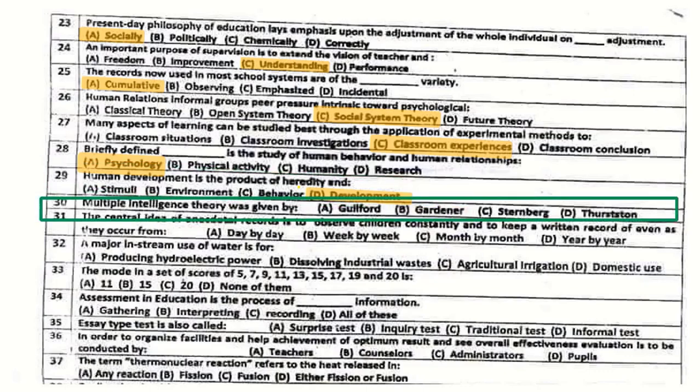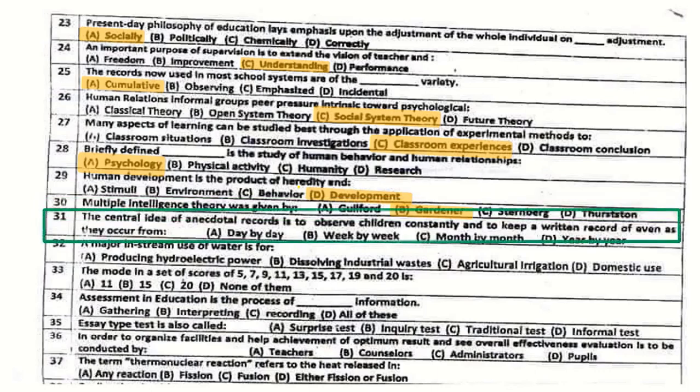Question number 30: The Multiple Intelligence Theory was given by Gardner — option number B.